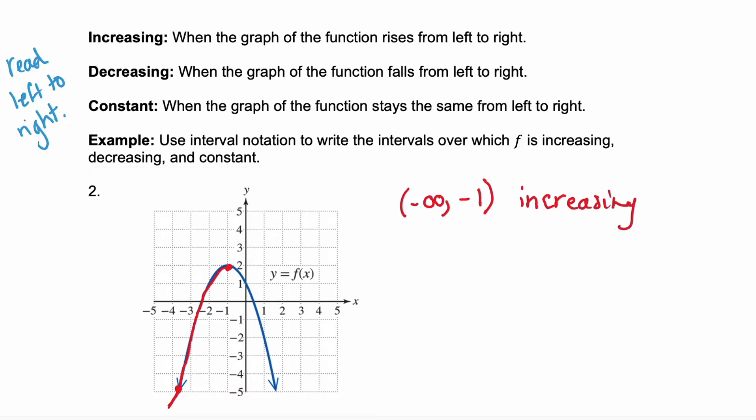Now I'm going to change colors. And notice that as we transition at this point, and we keep on following along that graph, we start falling. So from that point negative one, and we've got this arrow on the far right, to positive infinity, our graph is decreasing. So the function decreases from negative one to infinity.